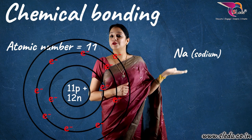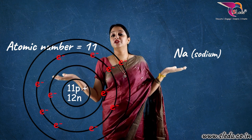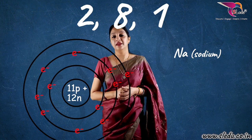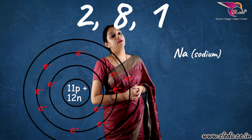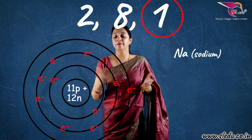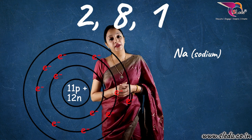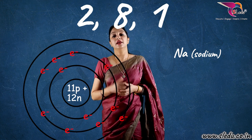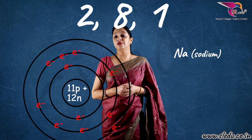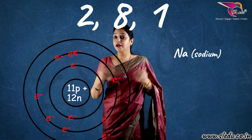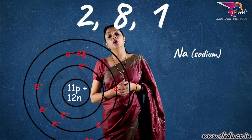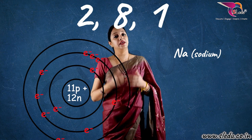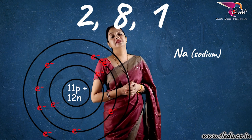Now, what is sodium's electronic configuration? It will be 2, 8, 1. Its last shell has how many electrons? One. Ideally, when you study electronic configuration, you are told that the last shell should have eight electrons — a maximum of eighteen, but effectively eight. Because when eight electrons come in, that element becomes stable.